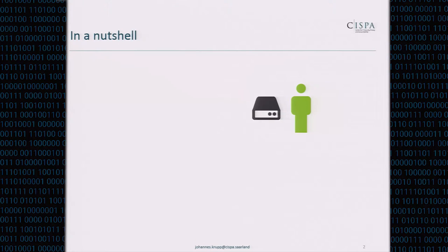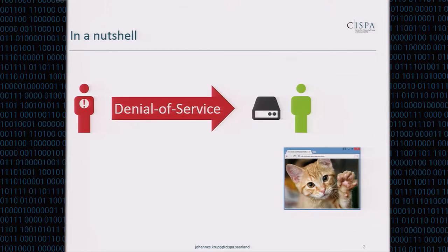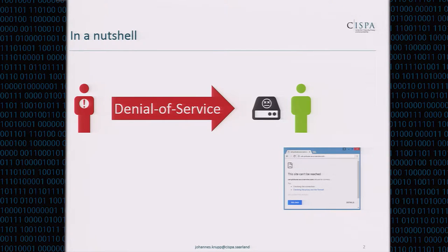So in a nutshell, what is this about? We have a good guy running some critical infrastructure, like for example serving cat pictures, and of course we also have a bad guy who wants to attack the service. He will run a denial of service attack and flood the system with lots of traffic, which causes the server to die and nobody's able to see cat pictures anymore, which is of course very upsetting on the internet.